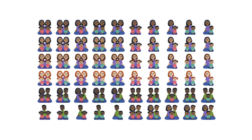In 2017, Facebook took a different approach, creating 125 new emoji that simply added skin tone variations to each family. But that meant there were still no multi-racial family options, which earned the company criticism.